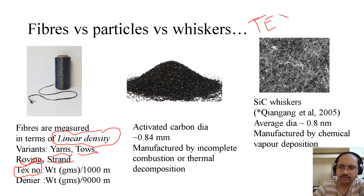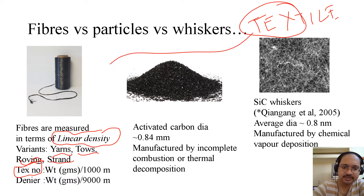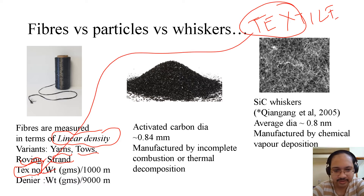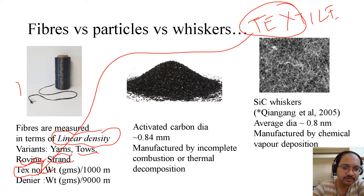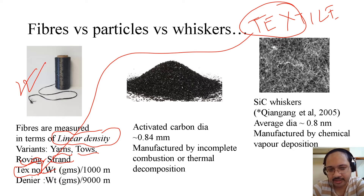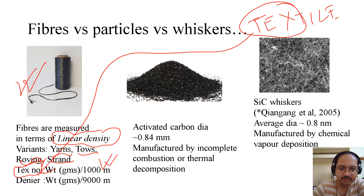There is also something called the tex number. Do you remember the word textile? This 'tex' is where tex number comes from. The tex number is the weight per thousand meters — that is, weight per kilometer — in grams per kilometer. Typically if you go to the market to buy a bobbin, they will say how many kilos you want and what is the length; it is around one or two kilometers, and you get it in this format.